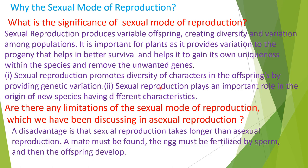Sexual reproduction promotes diversity of characters in the offspring by providing genetic variation. When genetic variation comes, it continues for a long time in that particular species. Sexual reproduction plays an important role in the origin of new species having different characteristics. In 9th class, you did classification and diversity in organisms in Chapter 7.